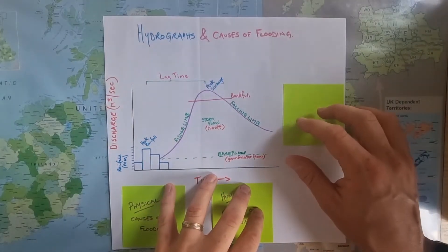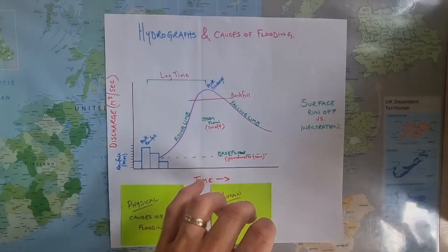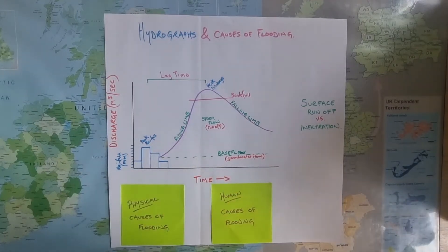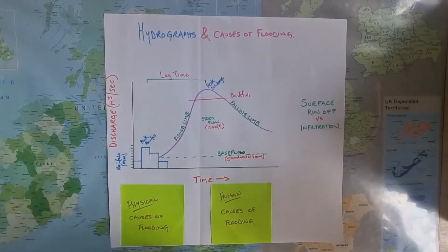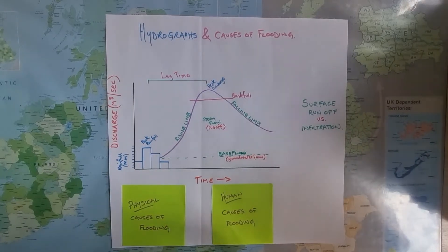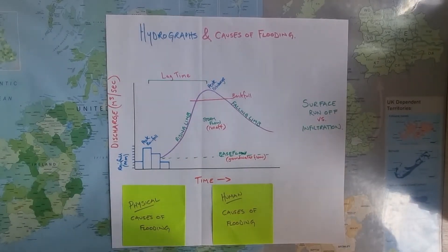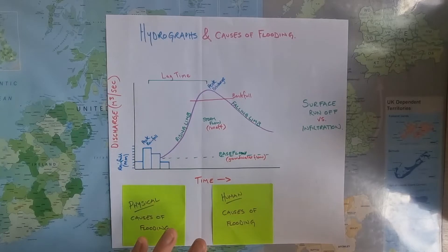So let's now consider runoff and infiltration. The key to whether a flood is likely is how the water reaches the river channel. If it all runs off the surface, it will enter the river quickly, all arriving at the same time. The river won't be able to cope and will burst its banks, causing a flood. This links to the supermarket car park scenario I mentioned earlier.